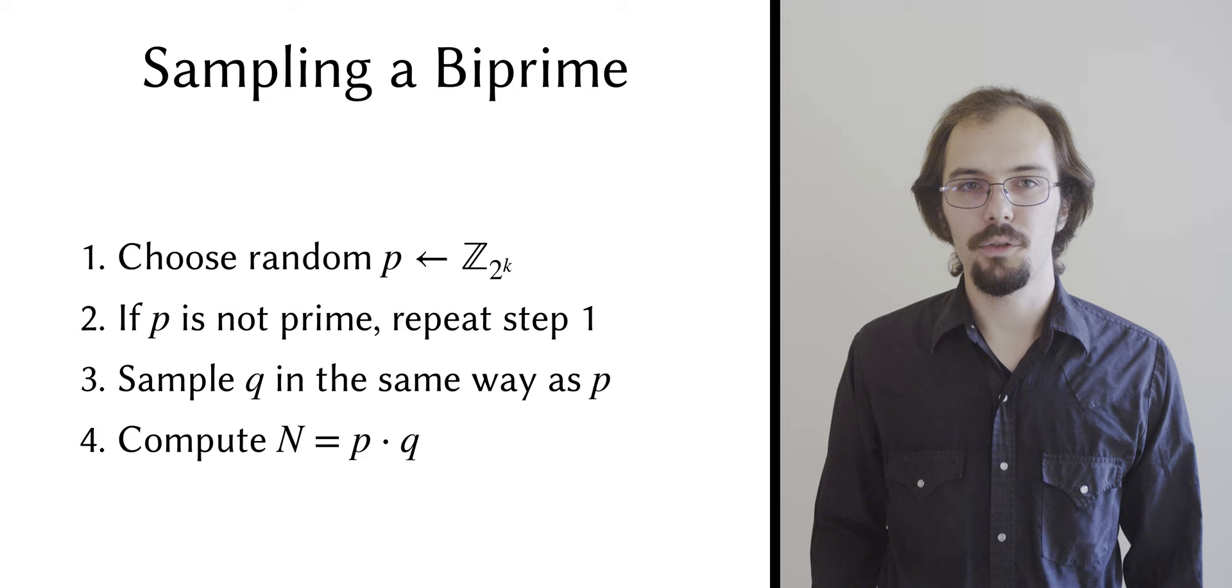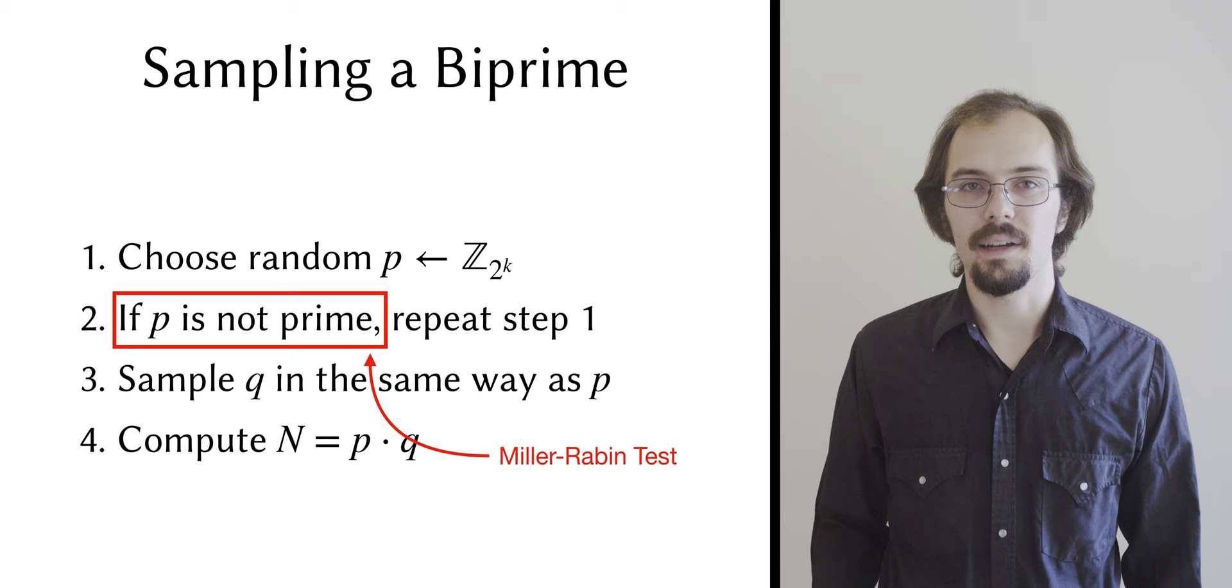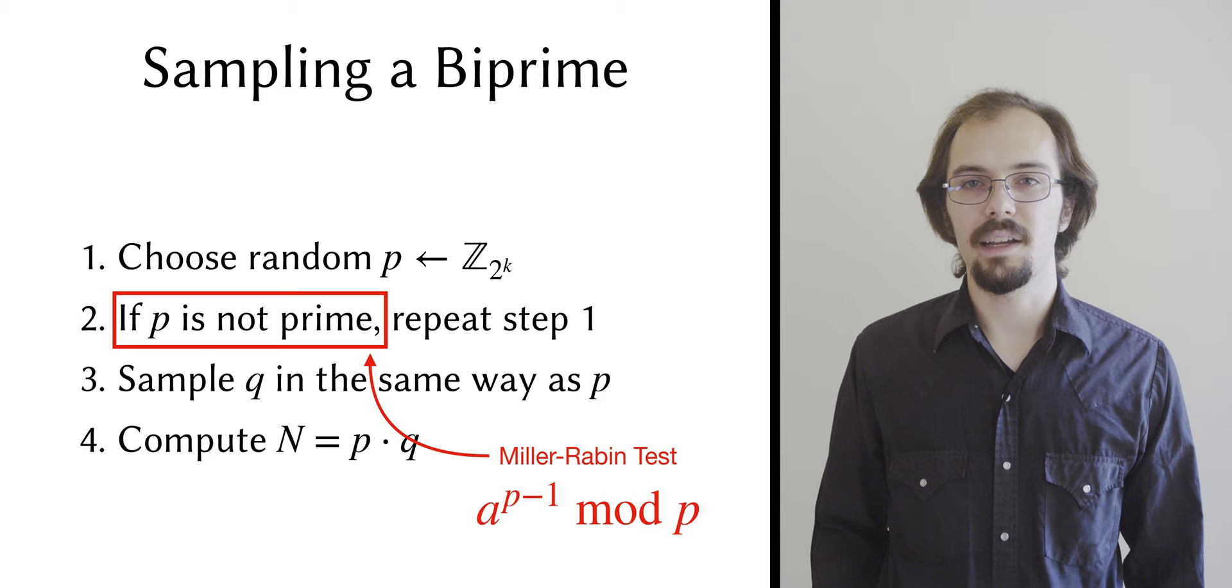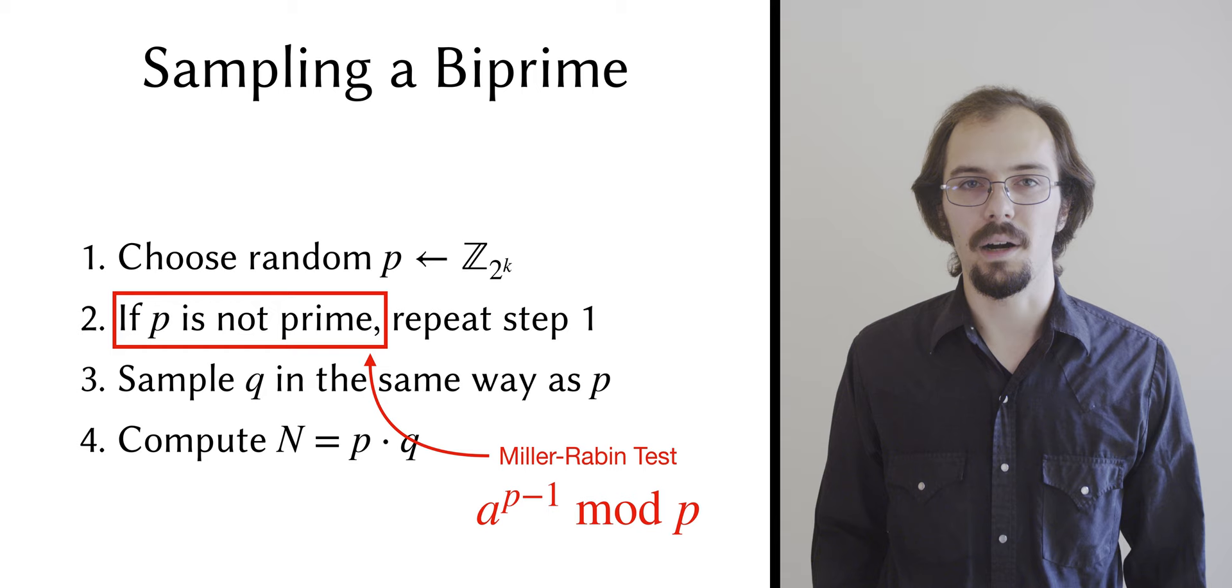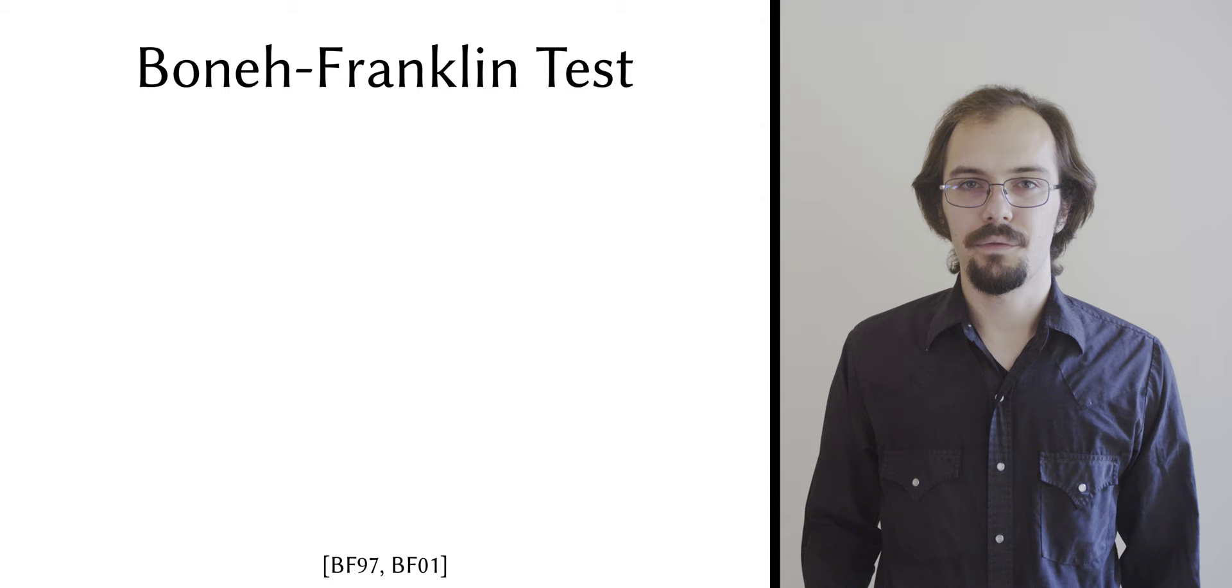Primality is usually determined via the Miller-Robin test. I won't show it to you in detail, but the important thing to know is that it requires us to repeatedly take a random base a to some secret power modulo p. Turning this into a multiparty protocol naively would require many secure modular exponentiations with large secret moduli, and this is very, very far from practical.